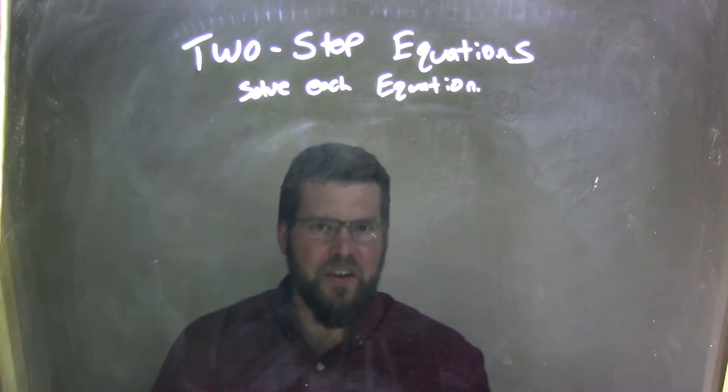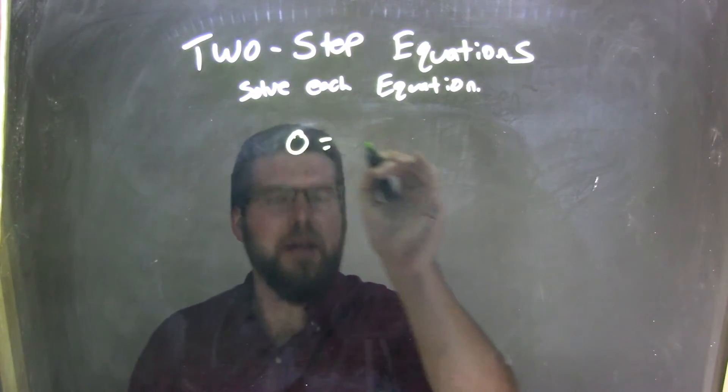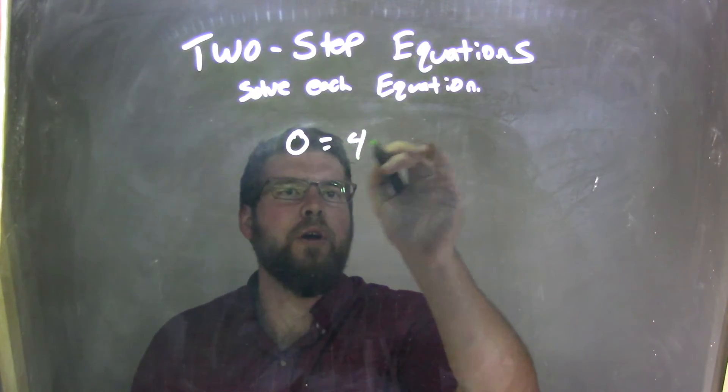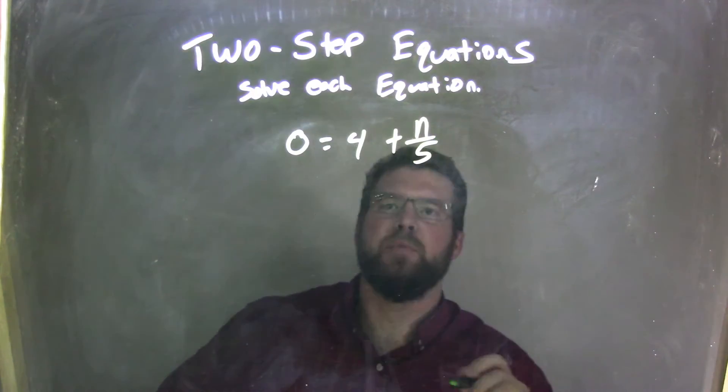So, if I was given this equation, 0 equals 4 plus n over 5, okay?